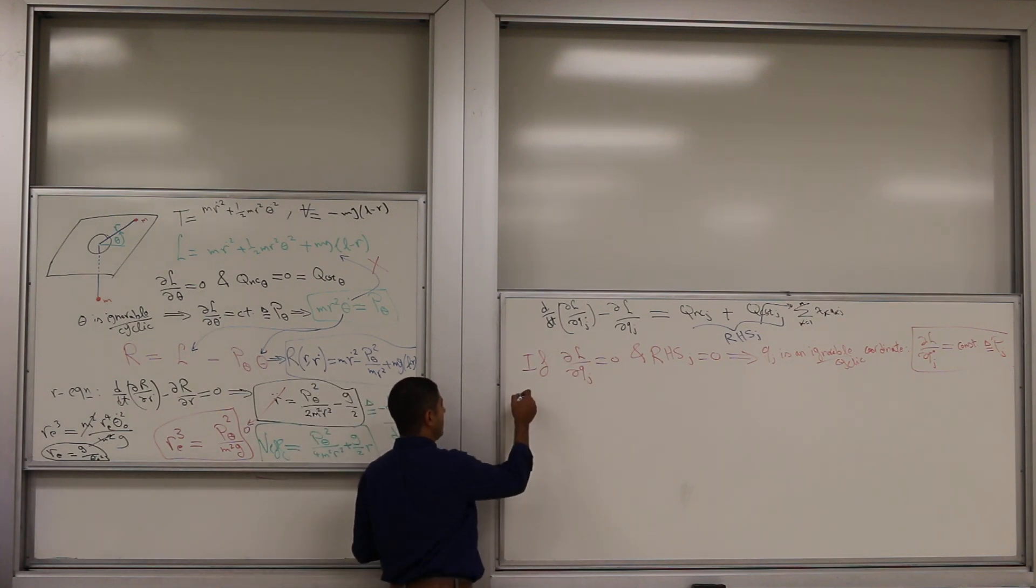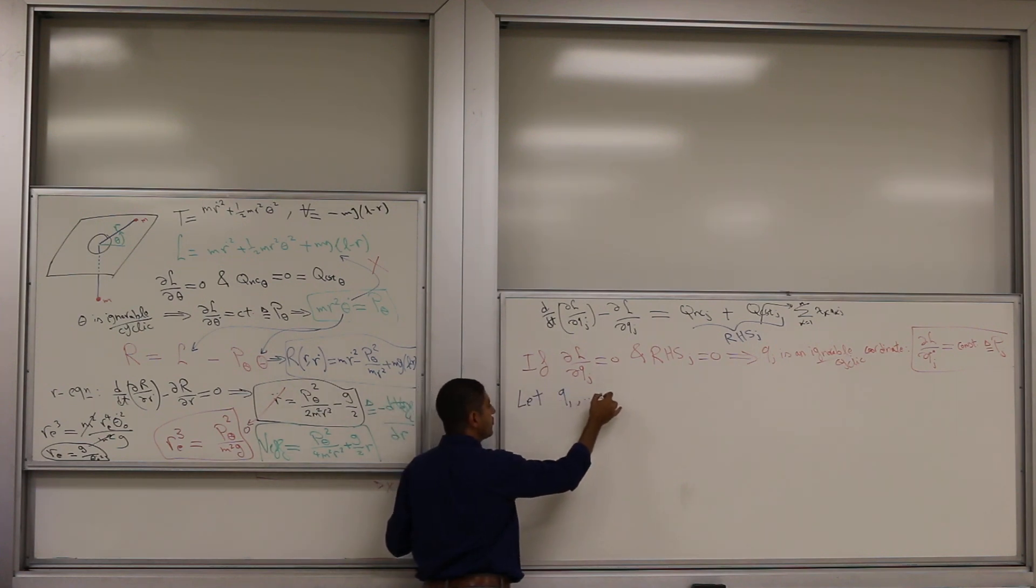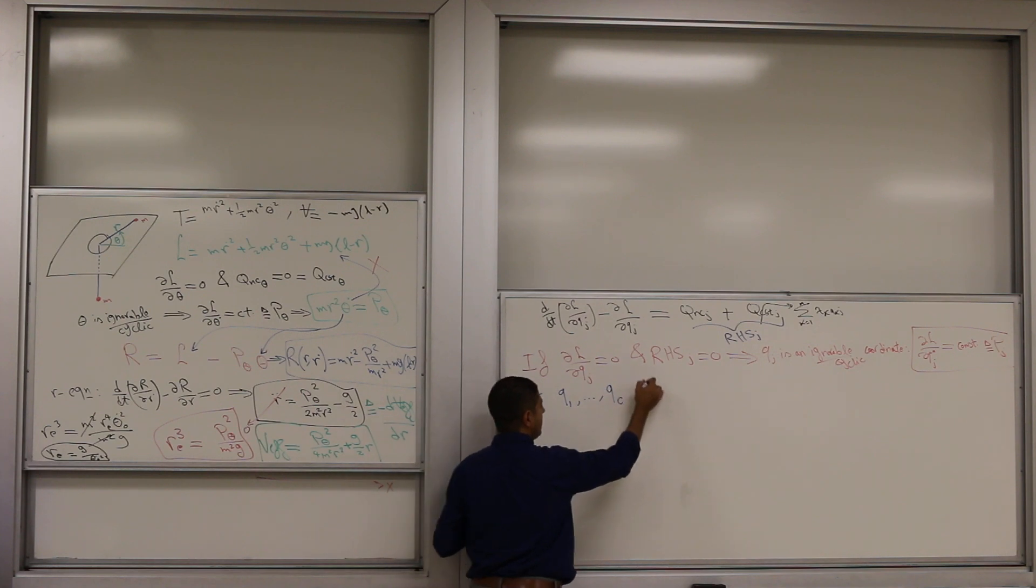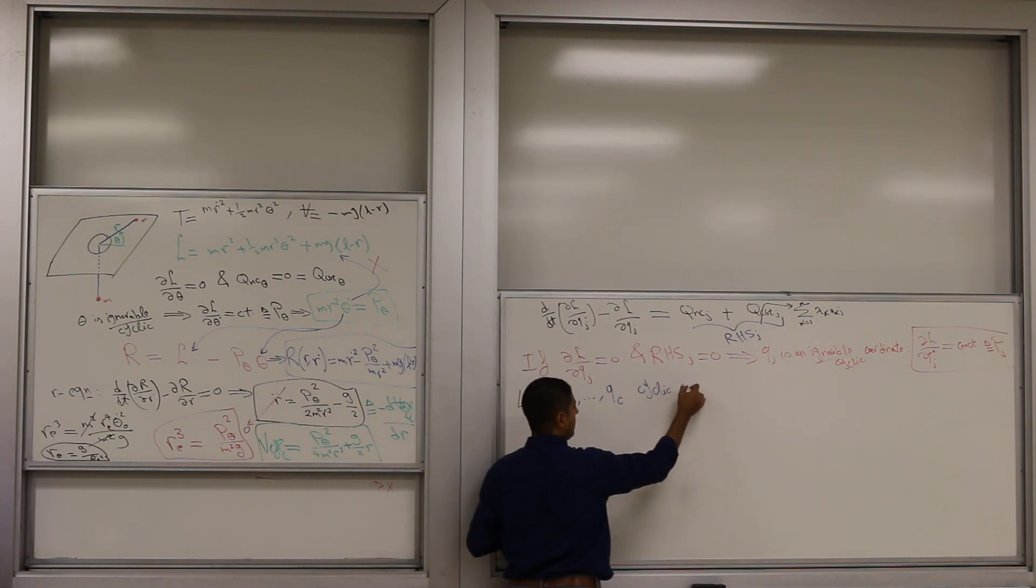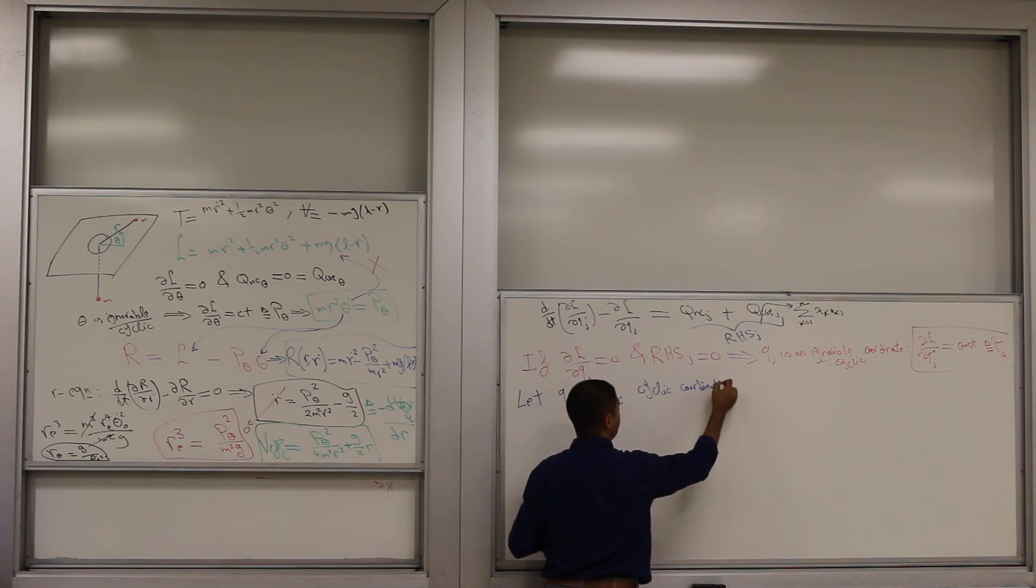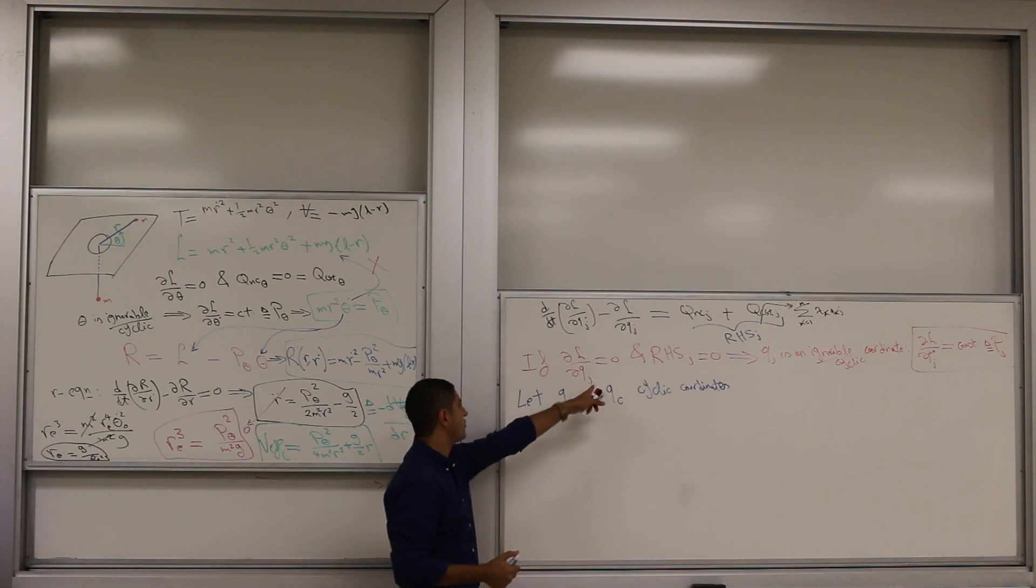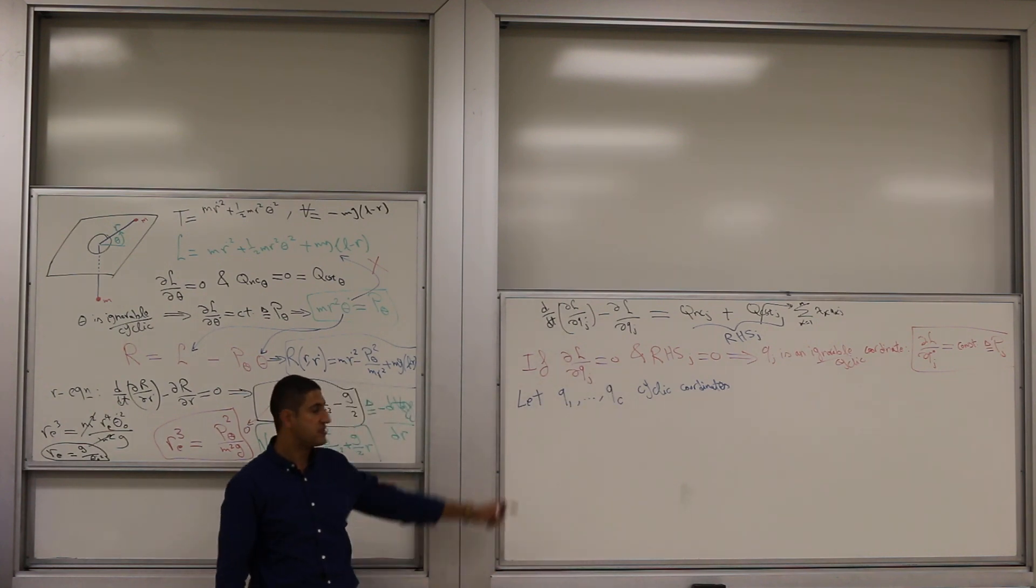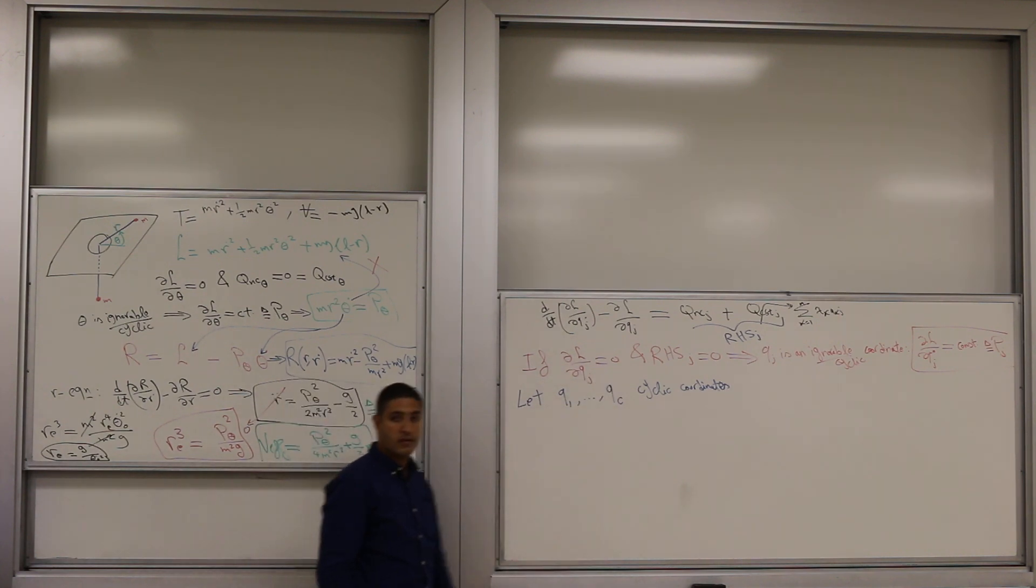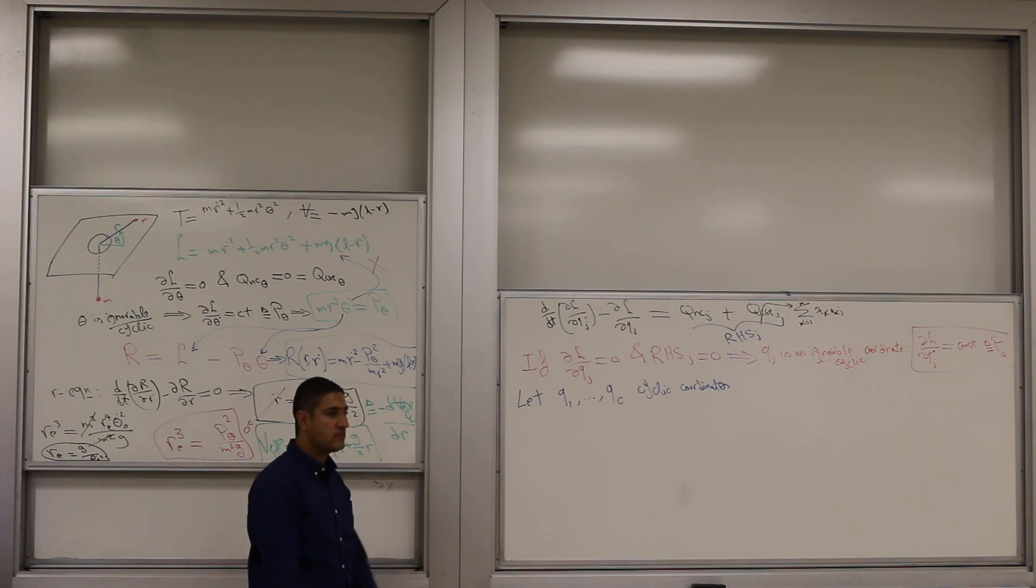Okay, now we're going to analyze the situation. Let us assume that we have q1 up to qc cyclic organs. Okay, so they don't show up in the Lagrangian by definition, right? Cyclic organs means that partial L partial Q's are zeros for these particular queries. So they don't show up in the Lagrangian, but their q dots show up. And I want to remove them.